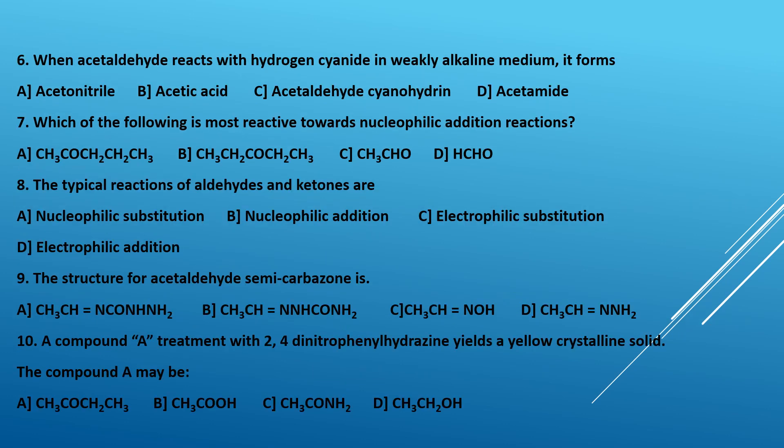Sixth question: when acetaldehyde reacts with hydrogen cyanide in weakly alkaline medium it forms — A, acetonitrile; B, acetic acid; C, acetaldehyde cyanohydrin; D, acetamide. As learned in chemical properties, CH₃CHO + HCN gives acetaldehyde cyanohydrin, so C is the correct answer.